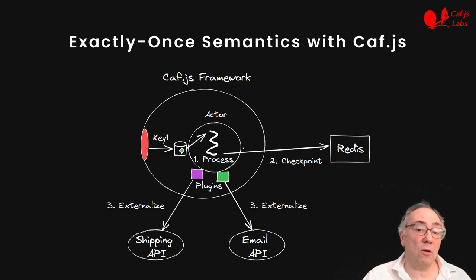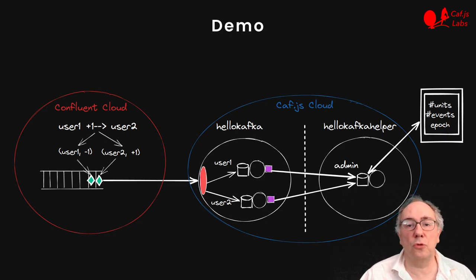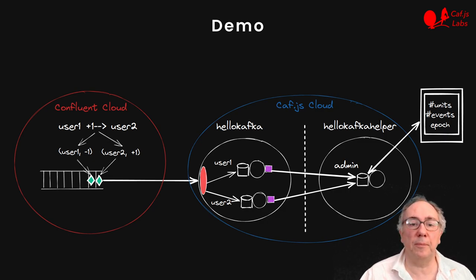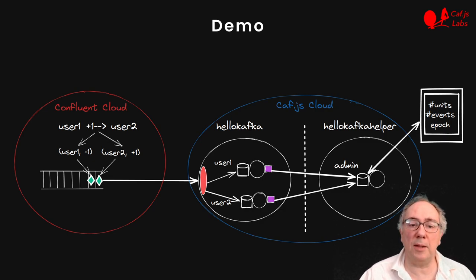Let me show you a simple example: Hello Kafka. This abstracts transfers of units between users of the KVJS cloud. Each transfer maps into two Kafka events — one incrementing the destination account and the other decrementing the source account. Since transfers are all internal, the total number of units does not change, and this simplifies detecting duplicates or missed events. Hello Kafka implements an API gateway, consuming events from a topic, dispatching them to local actors, and then these actors use the cross-app transactional plugin to interact with an external service that collects global statistics.